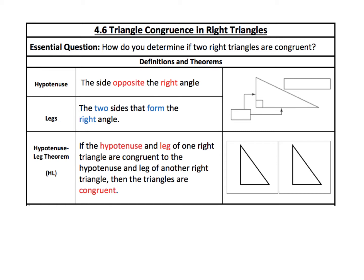We've all seen right triangles before. Remember, a right triangle is just a triangle that has one right angle. Most of the time the right angle is going to be marked with a 90-degree marker. In a right triangle, the hypotenuse is the side that's opposite the right angle — across from the 90-degree angle. The remaining two sides are called the legs; those are the two sides that form the right angle.